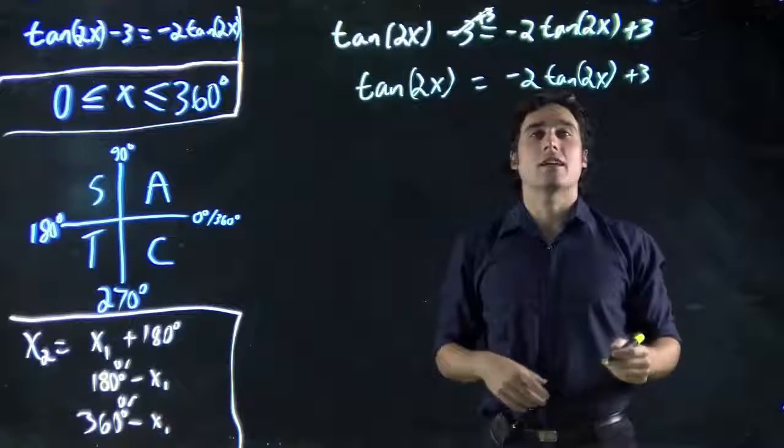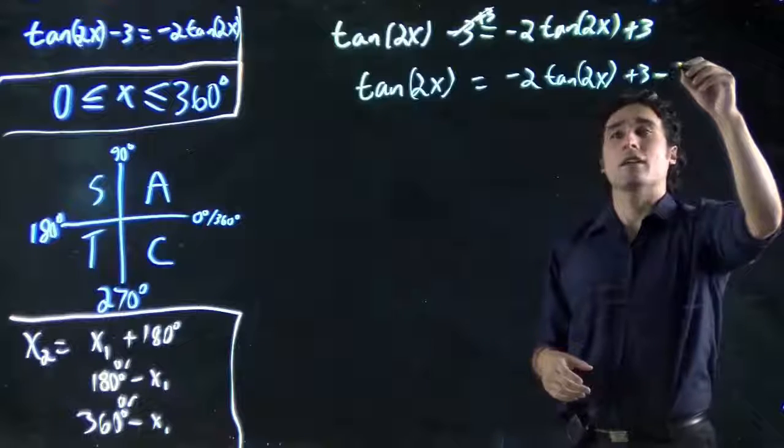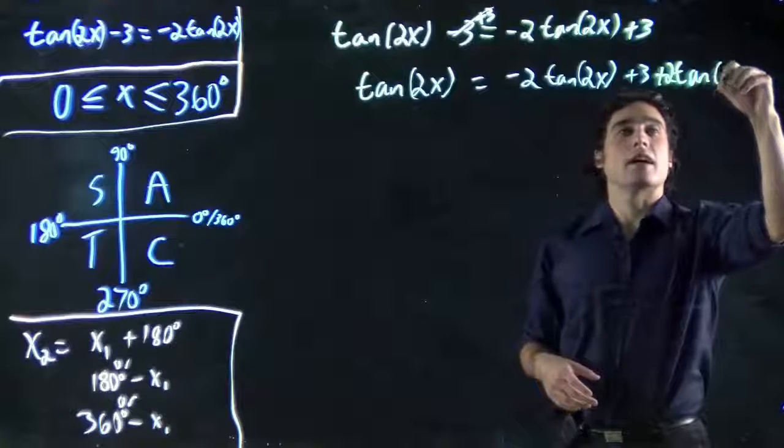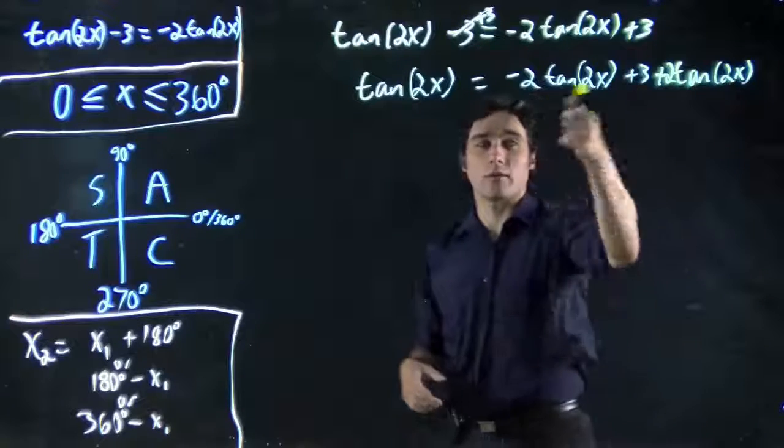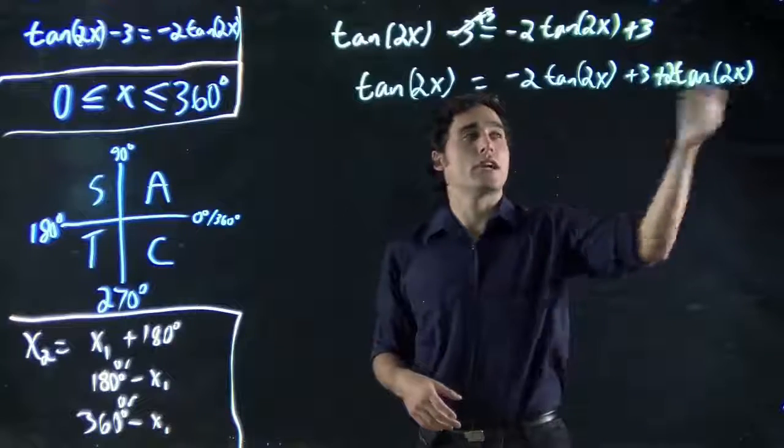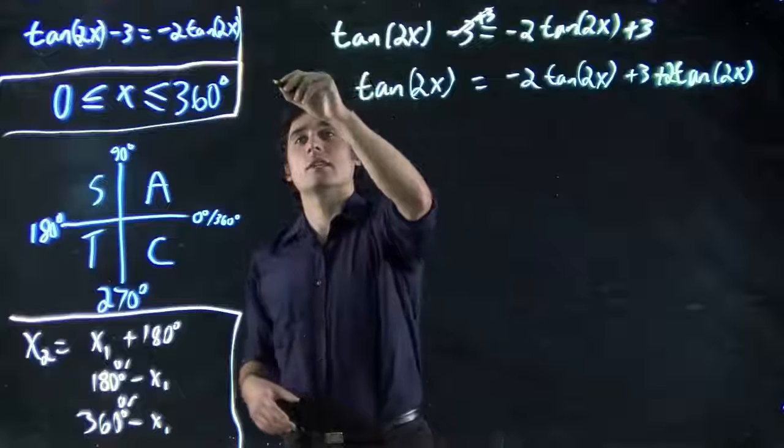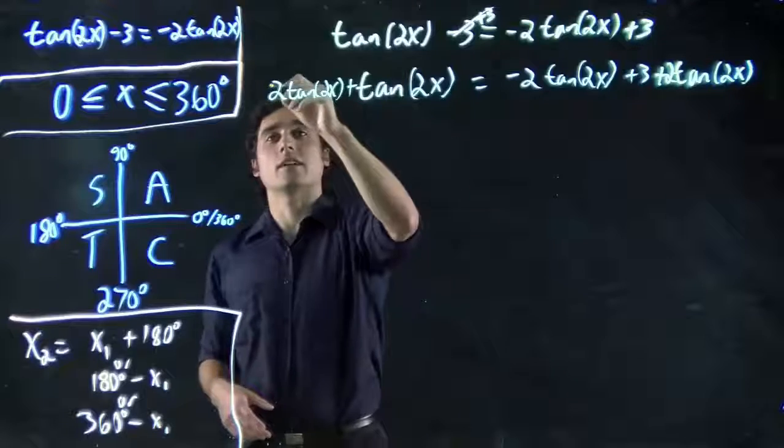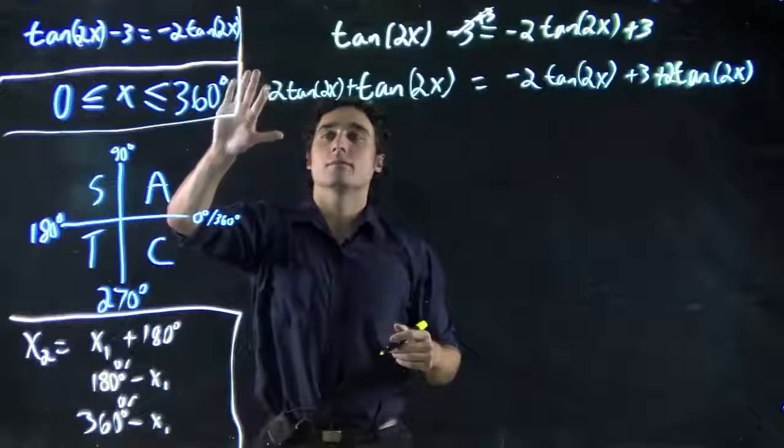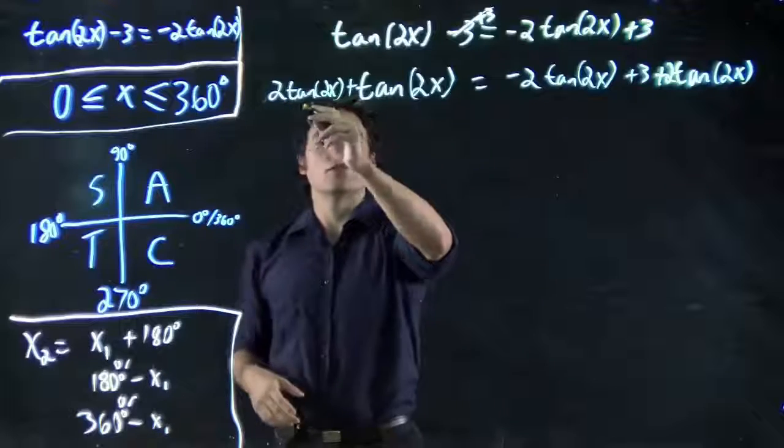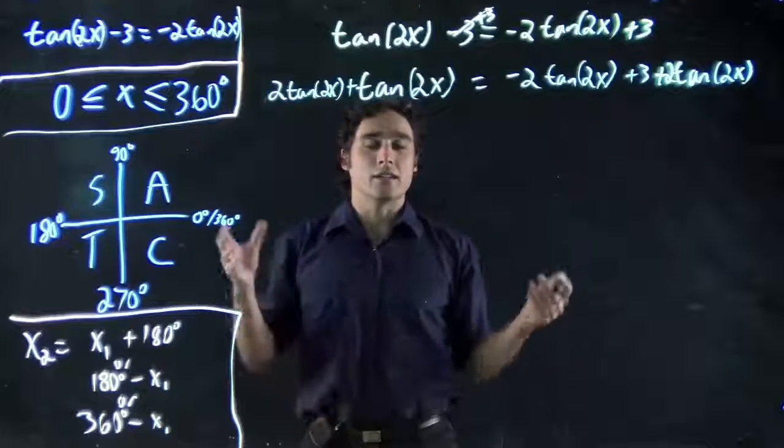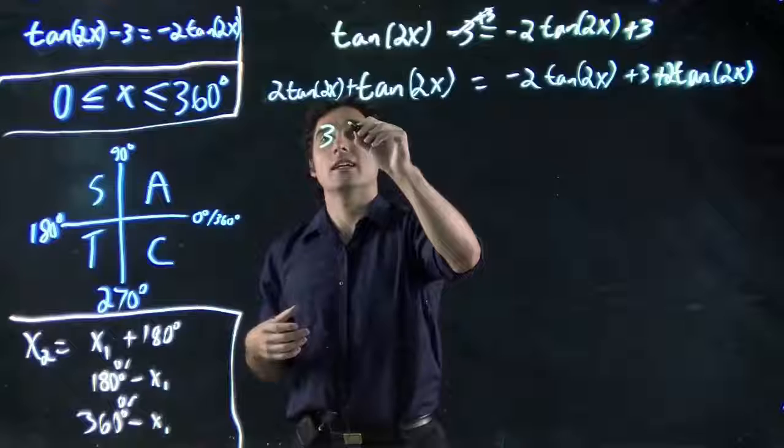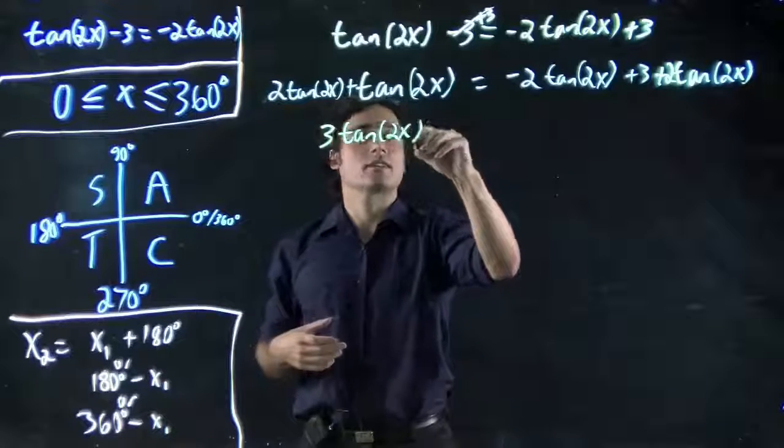But I want to get this -2tan(2x) to the other side. So I'm going to add 2tan(2x) to both sides. Remember, always the opposite. So 2tan(2x) being added to both sides. Those will cancel. And 2tan(2x) plus tan(2x), you can think that's the same as like 2y plus y, plus 3y, or in our case, 3tan(2x), which is equal to 3.